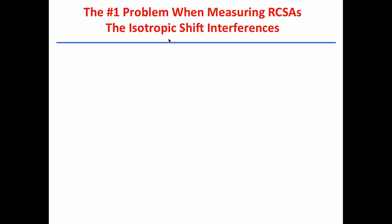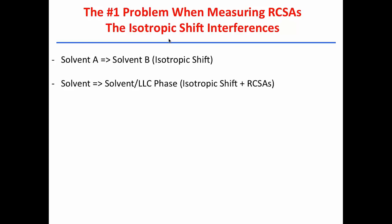The number one problem when measuring RCSAs are the isotropic shift interferences. So if you run an NMR in solvent A and then you change the sample to solvent B, then you observe an isotropic shift. And we, when we work in NMR, we know that we cannot compare spectra running two different solvents. So if we want to, for example, verify structure, we know that if we have the NMR data in methanol, we have to run in methanol to know if it is a structure. This is what I would call here isotropic shift.